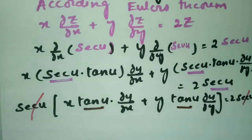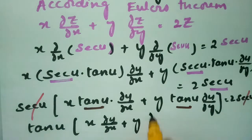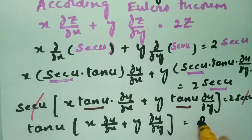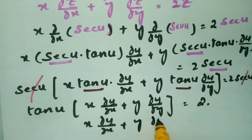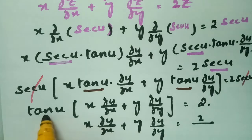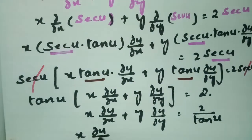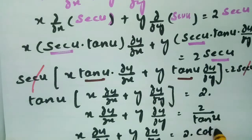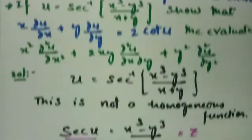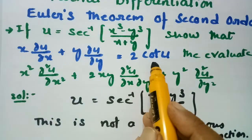Taking tan u common: tan u times (x into ∂u/∂x plus y into ∂u/∂y) equals 2. Therefore, x into ∂u/∂x plus y into ∂u/∂y equals 2 divided by tan u, which is 2 cot u. So we have shown that x into ∂u/∂x plus y into ∂u/∂y is equal to 2 cot u.